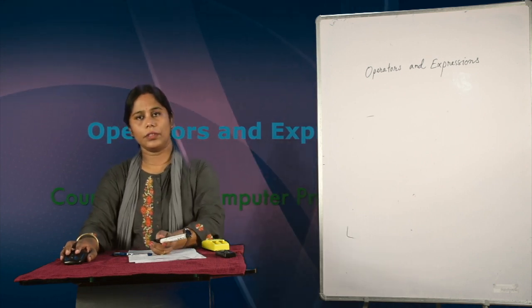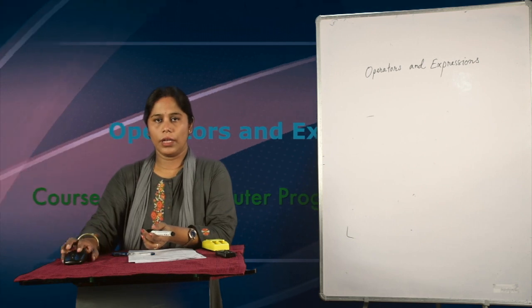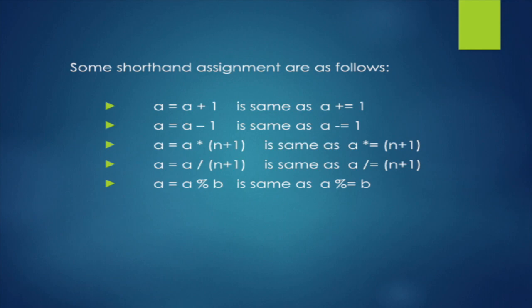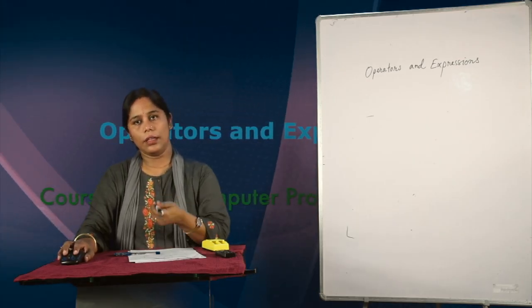There are shorthand assignment operators. For example, A equal to A plus 1 can be written as A plus-equal 1. Similarly, A equal to A minus 1 can be written as A minus-equal 1. And A equal to A mod B can be written as A mod-equal B. These are shortcut assignment operators — we can write these statements in a shorter way.